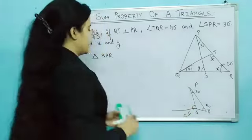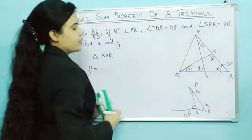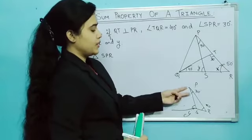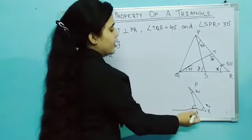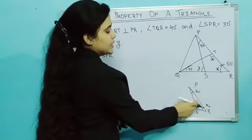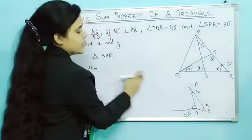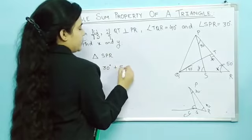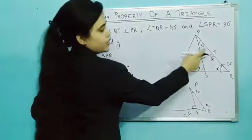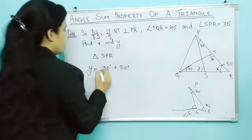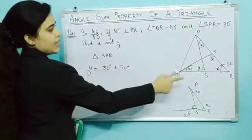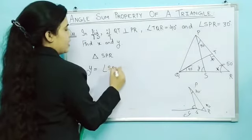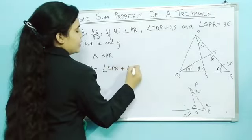So this angle Y will be equal to the sum of two interior opposite angles. Y is opposite to two interior angles, that is 30 degrees plus 50 degrees. These are the opposite two angles. So which angles are these? Angle SPR plus angle x. This comes from the theorem we studied.